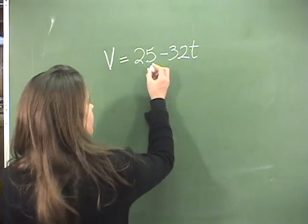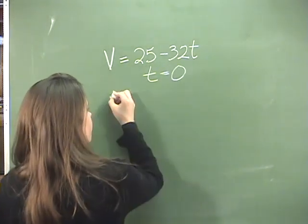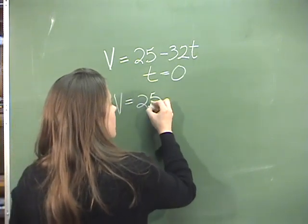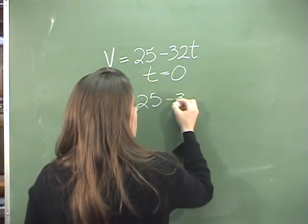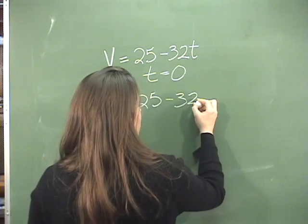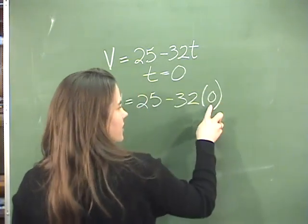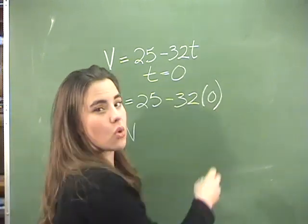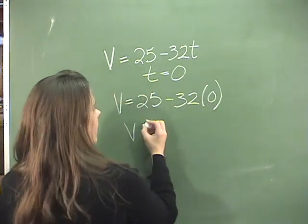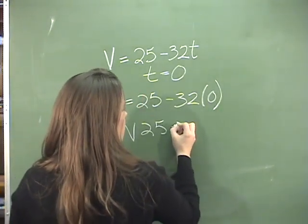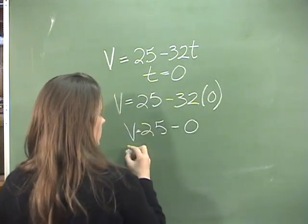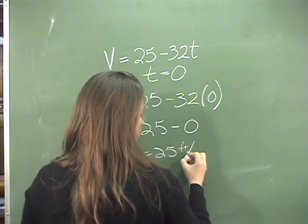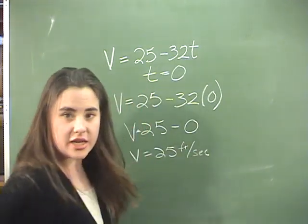For instance, let's see what this equals when the time equals zero. If velocity or the speed equals 25 minus 32T, we plug in zero for T, then at zero seconds or when the ball was released, it's going to have been traveling 25 minus zero or 25 feet per second.